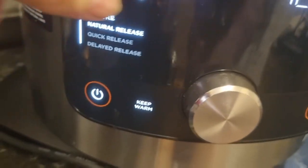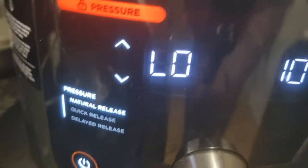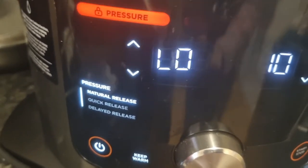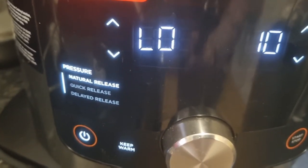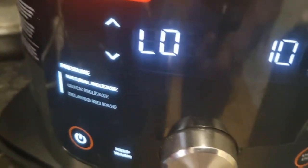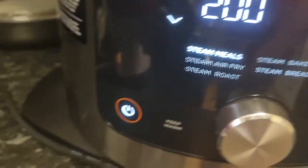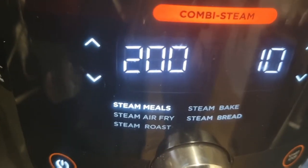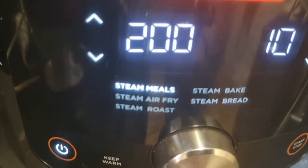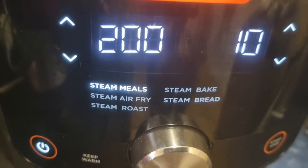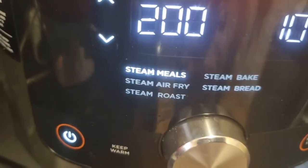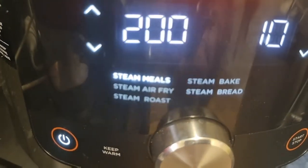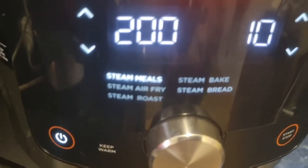Okay, you can cook it on high or low in pressure cooking, and pressure cooking tenderizes everything, honestly wonderful. Then we go across to the middle and we can steam meals, we can steam and air fry, we can steam roast, we can steam bake, and we can steam bread.